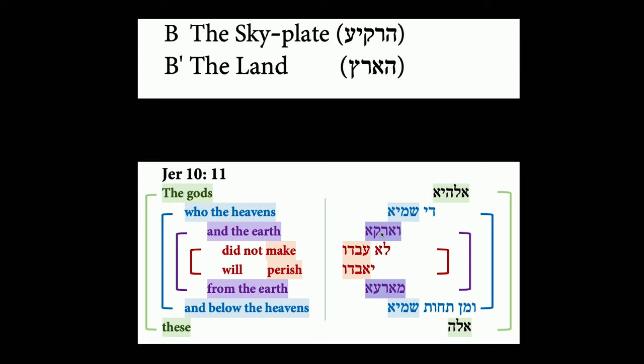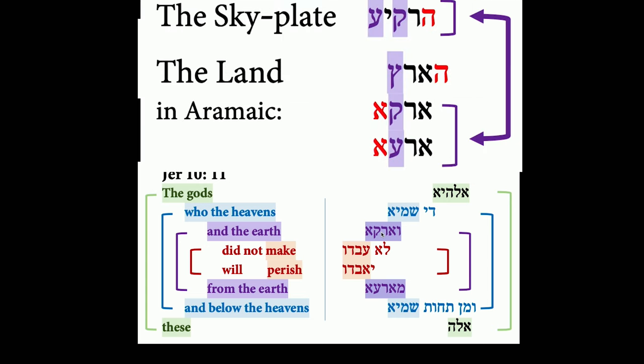Back to Genesis 1. It seems to me that rather than depicting a dome, the skyplate is intended to represent a mirror image of the land, a symmetrical pair. And this relationship is given linguistic articulation. It is rendered tangible in the perceptual similarity between it, the rakiah, and the Aramaic equivalence for land, ar-ka, ar-ah, and its structural correspondent.